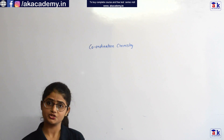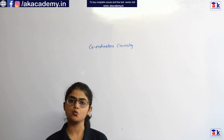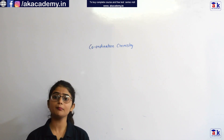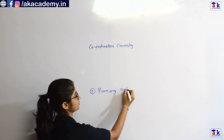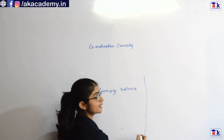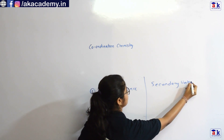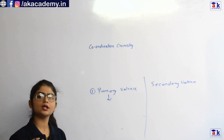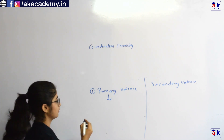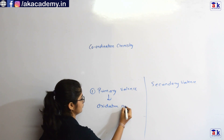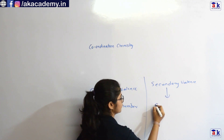The first inorganic chemist to give a theory regarding the formation and structure of coordination compounds was Werner. Werner's theory says that every metal has got two types of valencies: the first one is primary valency, and the second one is secondary valency. Primary valency corresponds to the oxidation number of the metal, and secondary valency corresponds to the coordination number.